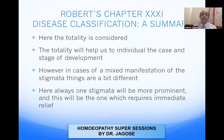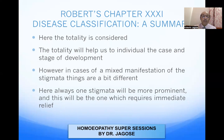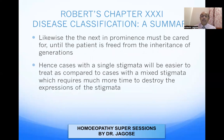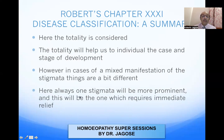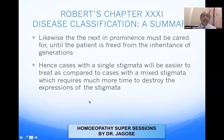The totality will help us to individualize the case and the stage of development. In cases of single stigmata, it is quite simple — take the characteristic totality and find out the similimum. In cases of mixed stigmata, always one stigmata will be more prominent, and that is the one which requires immediate treatment. Once the prominent stigmata has been treated and its symptoms disappear, the next characteristic stigmata symptoms will become prominent, and that must then be cared for, until the patient is freed from the inheritance of the generations.